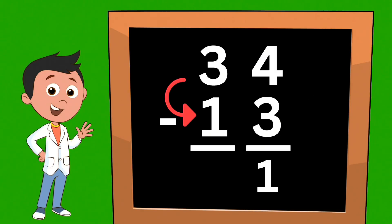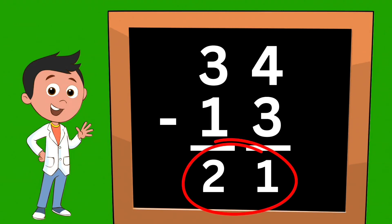Now we're going to move to the left, our tens column. Three minus one — that equals two. So our answer is twenty-one.